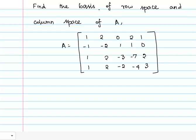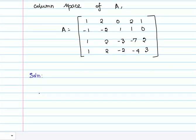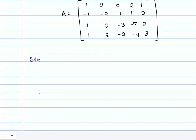So now let's start. Our first step is to convert the given matrix into row reduced echelon form. You already studied what the row reduced echelon form is. First, I will take the given matrix A.